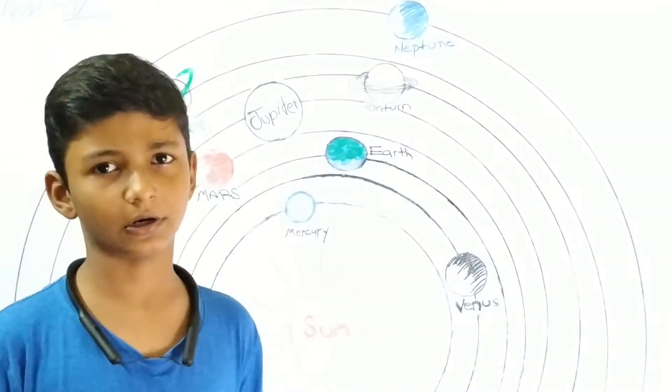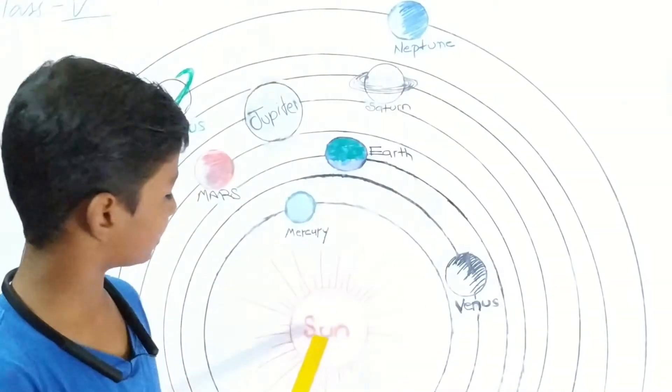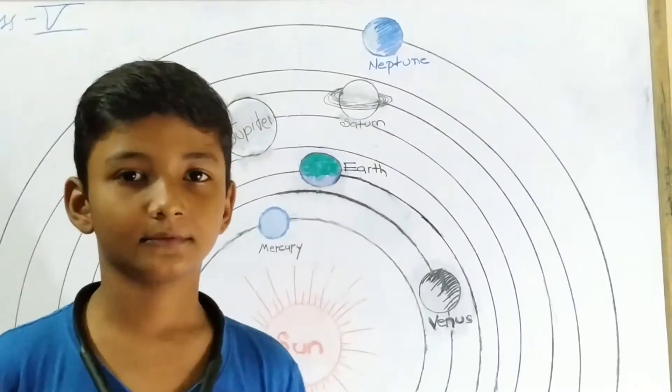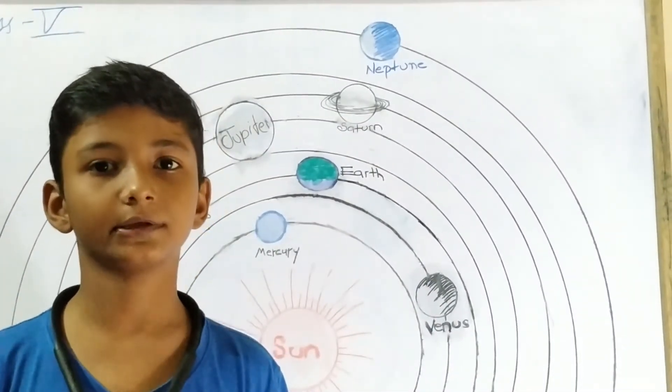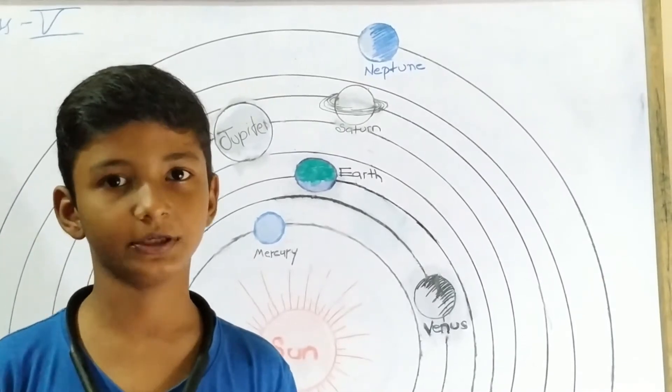Planets do not have their own light. They reflect the light of the Sun which falls on them. There are eight planets in our solar system. I am naming all the planets in increasing order of distance from the Sun.